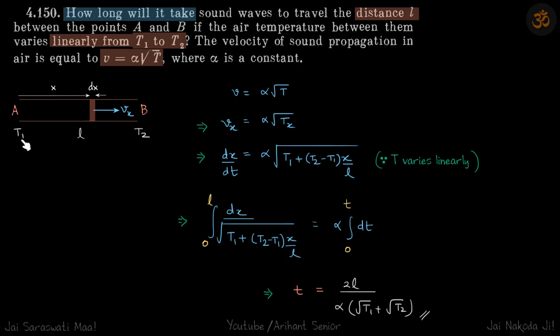Initial temperature is T1 and final temperature is T2. Temperature is varying linearly, so obviously velocity will also vary along with the length. So let's take a dx amount of length that the sound has to travel.